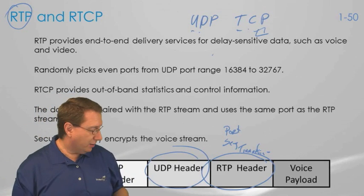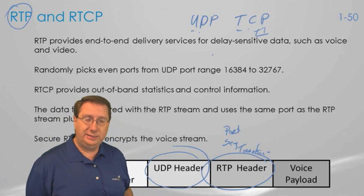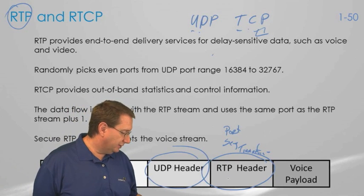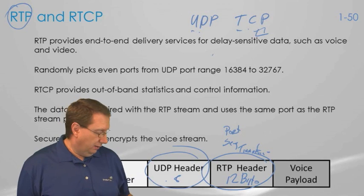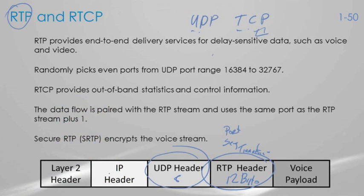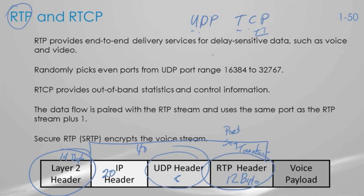Let's go back to the drawing because there are other elements we need to understand. The RTP header is going to be 12 bytes in size, the UDP header is going to be 8 bytes in size, and the IP header is going to be 20 bytes. So we have 40 bytes of header. We also have an additional Layer 2 header - if we're using Ethernet, I think it's 14 bytes in length. So we have this big header: 40 bytes for IP, UDP, and RTP combined.